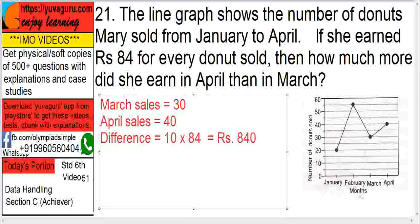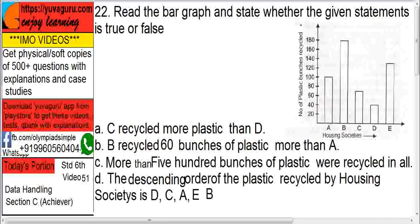March sales are 30, April sales are 40. So the difference is 40 minus 30 equals 10. Then 10 times 84 rupees per doughnut equals 840 rupees. That much she earned more.